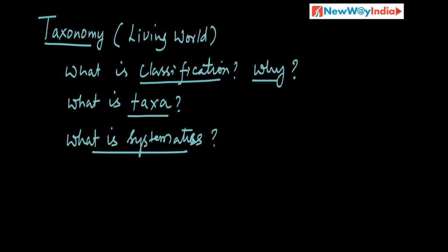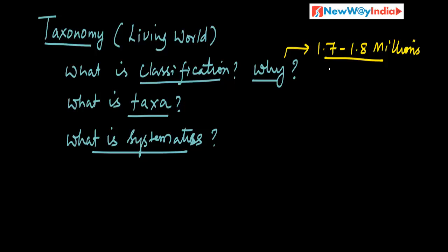Why do we need Classification? Because there are a huge number of living organisms — 1.7 to 1.8 million living organisms. We want to classify them. If you want to study every organism, it is not possible. So we need a system to classify; we need to make them into groups.